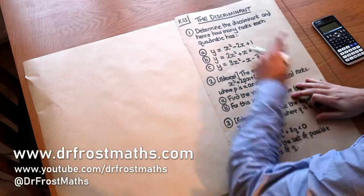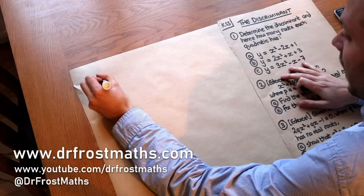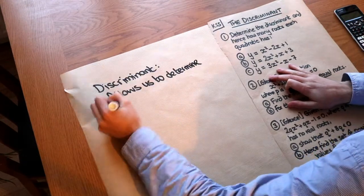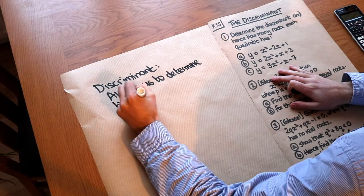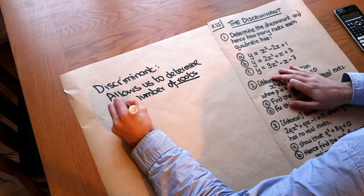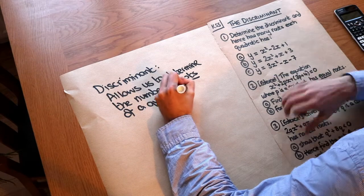Hello and welcome to this Dr Ross Maths video on Key Stage 5, the discriminant. Now what the discriminant enables us to do is allows us to determine the number of roots of a quadratic. I'll explain how we calculate the discriminant in a second.